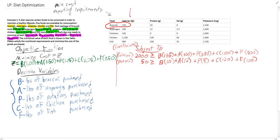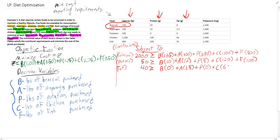We've done the calories and protein, and now we need the fat constraint. Our fat constraint requires at least 40 grams of fat, so it must be greater than or equal to 40. Broccoli has 0 grams of fat, plus asparagus at 1.5, plus potatoes at 0 as well, plus chicken at 60 grams of fat, plus fish at 55 grams.